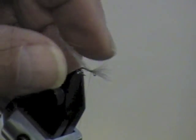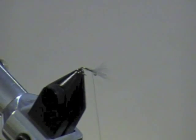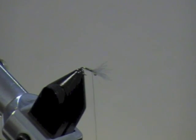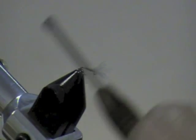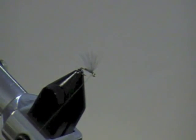Take a couple more turns. Clip off the excess. Cover that up to create a thorax with thread. Pull my wing up. Put a little dam in front.